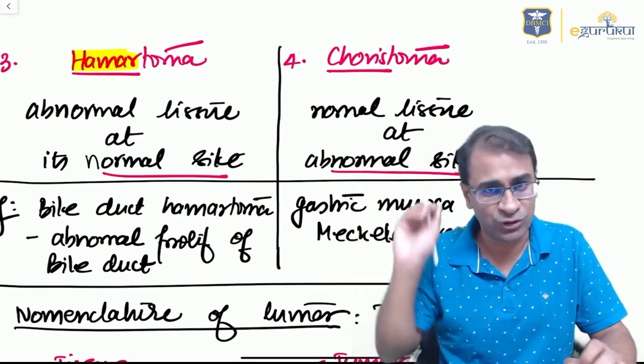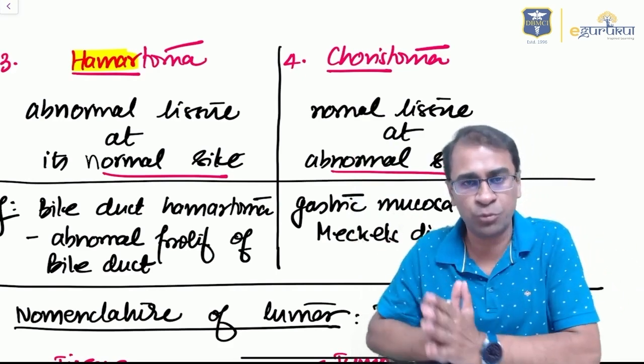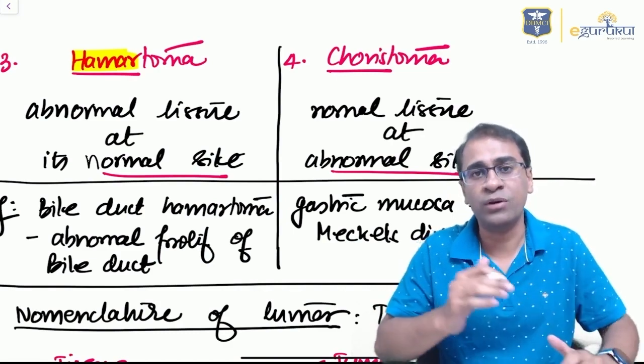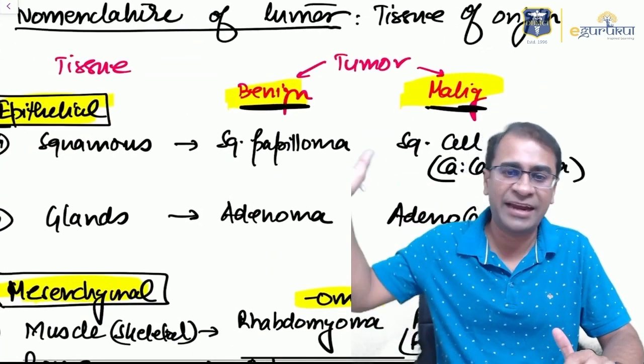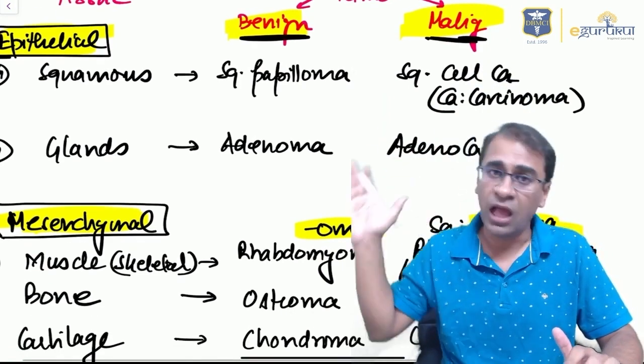How do you name a tumor? You name it as a benign tumor or a malignant tumor. For example, if you name a benign tumor, you call it papilloma. A malignant tumor can be called squamous cell carcinoma, adenoma, and similarly adenocarcinoma.